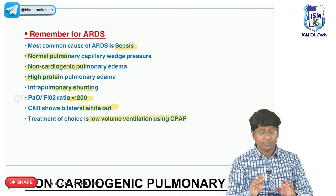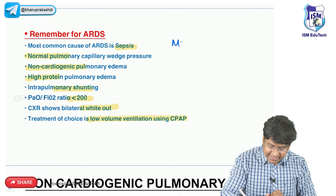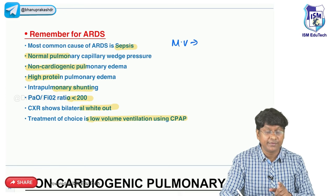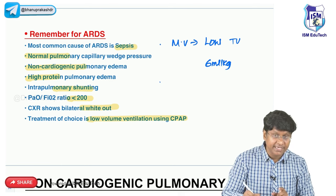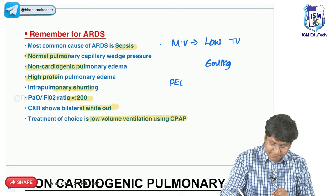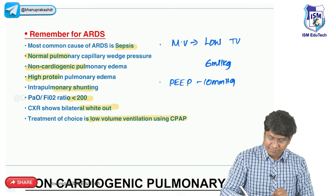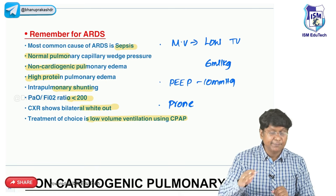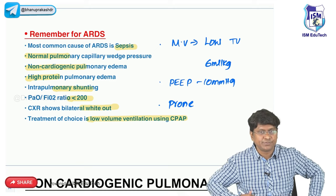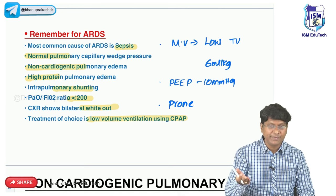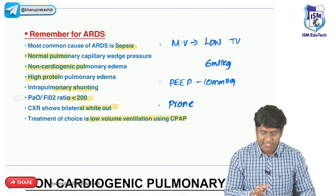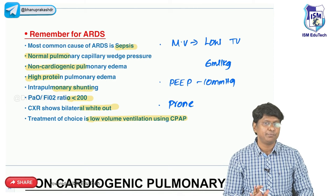Mechanical ventilatory settings are very important. You require low tidal volume of around 6 ml/kg, and adequate PEEP (positive end-expiratory pressure) of around 10 mmHg. Most of the time, these patients are managed in the prone position rather than supine, because there will be recruitment of the dependent lung zones when the individual lies in prone position.